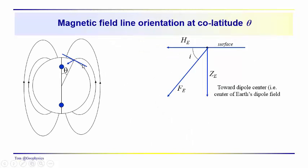We can also think of the field of a dipole — or the field of the Earth's magnetic field if we're thinking of it as a simple dipole. Here we are on the surface of a sphere, and the total field intensity is pointing down towards the north pole of the dipole. We know we can resolve this into a horizontal component and a vertical component given the inclination. Z sub B is pointing down towards the center of the dipole, and H sub B is tangential to the surface.